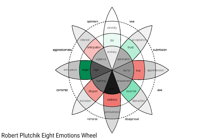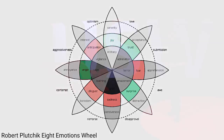How do we translate these eight down to two? When we're talking about positive emotions, we're really talking about things like joy and trust. And when we're talking about negative emotions, we're talking about things like sadness — emotions along those lines.